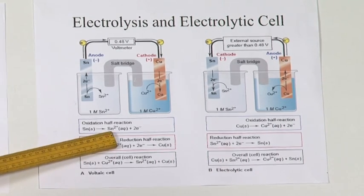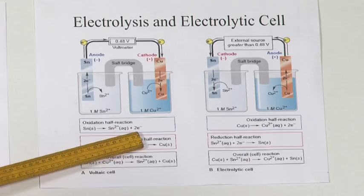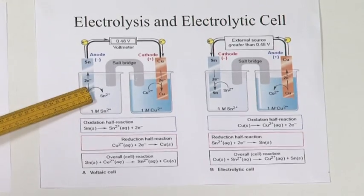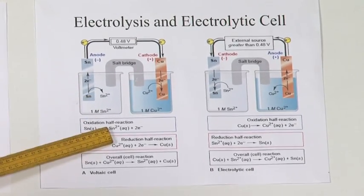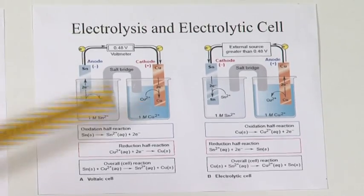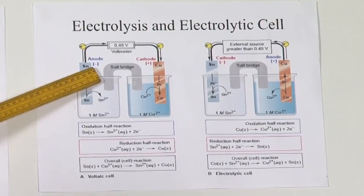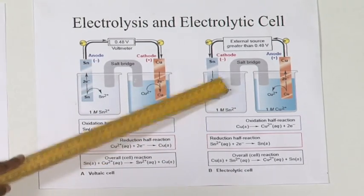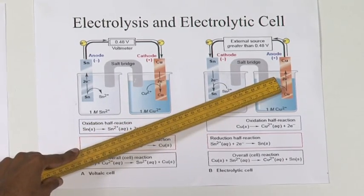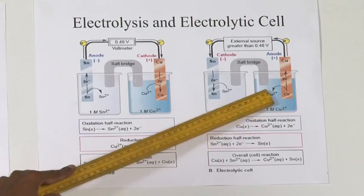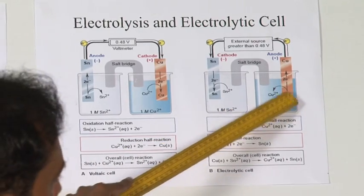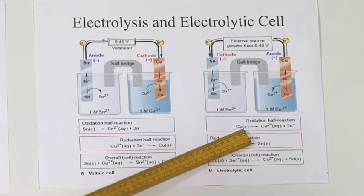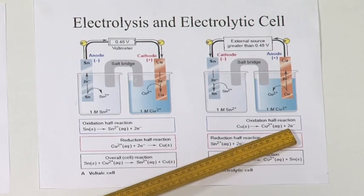Tin is getting oxidized to Sn2+ with the release of two electrons, this being the oxidation half. The oxidation half is the one where oxidation takes place, which is called the anode. In the electrolysis also, there is oxidation — the copper metal is coming into solution, getting converted to Cu2+ with the loss of two electrons.